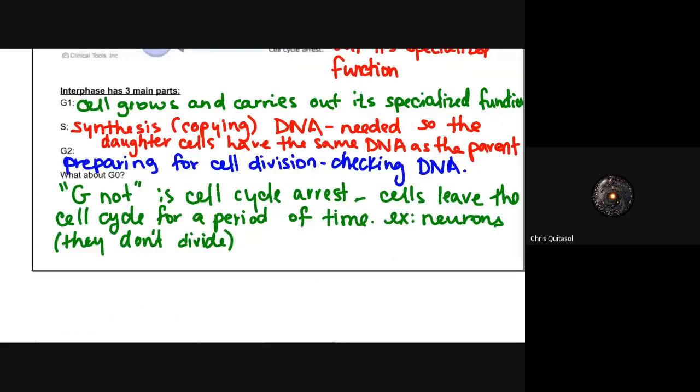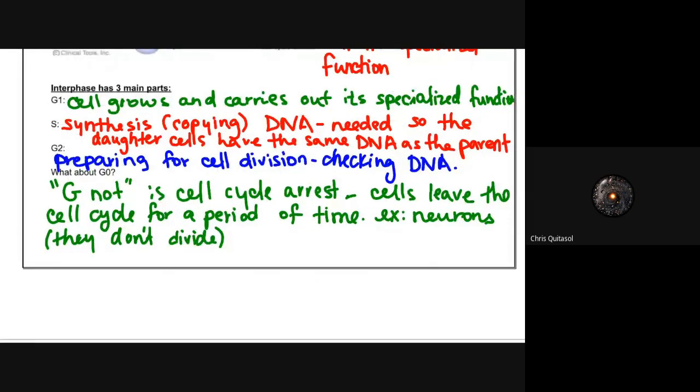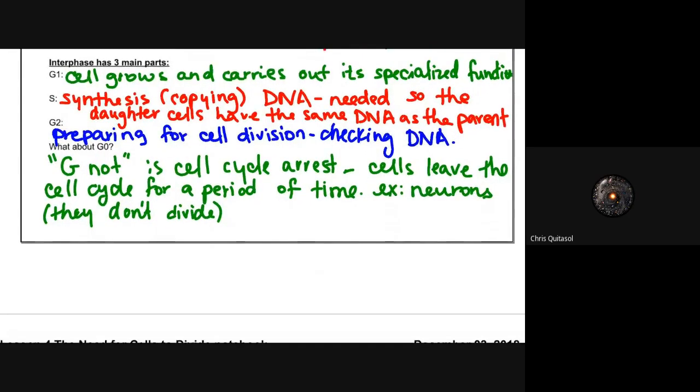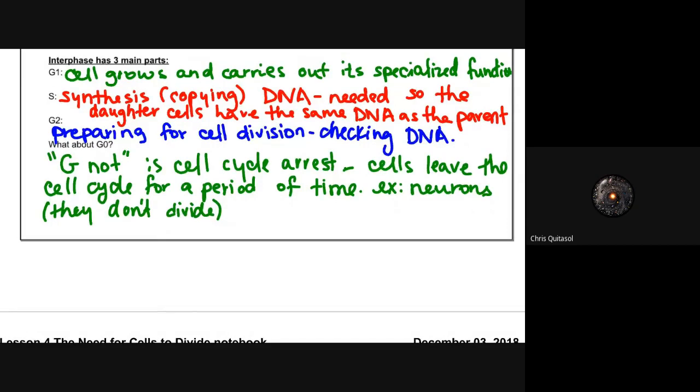There are three main phases of interphase. The first is G1 where the cell grows and carries out its specialized function. The second is the S phase or synthesis, the copying of DNA needed so that the daughter cell can have the same DNA as the parent. Again, this is mitosis, there will be identical daughter and parent cells. G2 is the preparing for cell division and the checking of the DNA. This is where the cell gets ready to divide and makes sure that the DNA is copied properly.